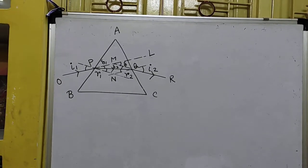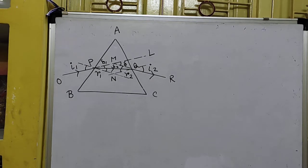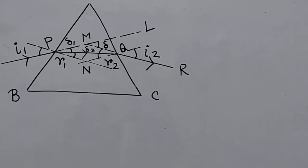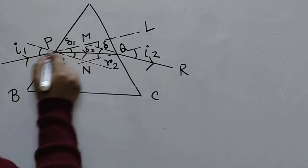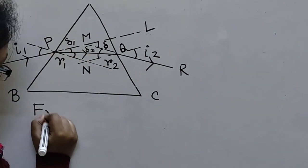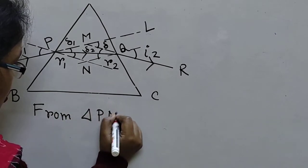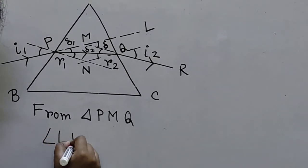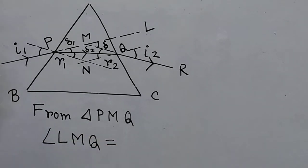If I see carefully what is happening — we know for a triangle that the exterior angle is the sum of two interior angles. This geometrical theorem: for a triangle, the exterior angle is the sum of two interior angles. Now, suppose I am considering the triangle PMQ. So from triangle PMQ, who is the exterior angle? Angle LMQ. Angle LMQ is my exterior angle, so angle LMQ is equal to the sum of two interior angles.